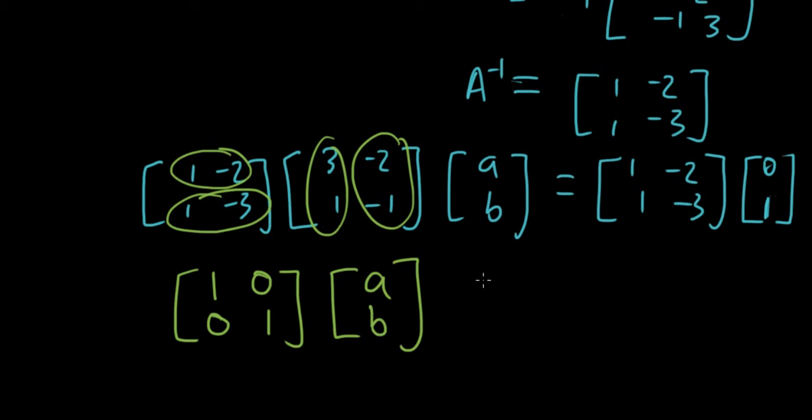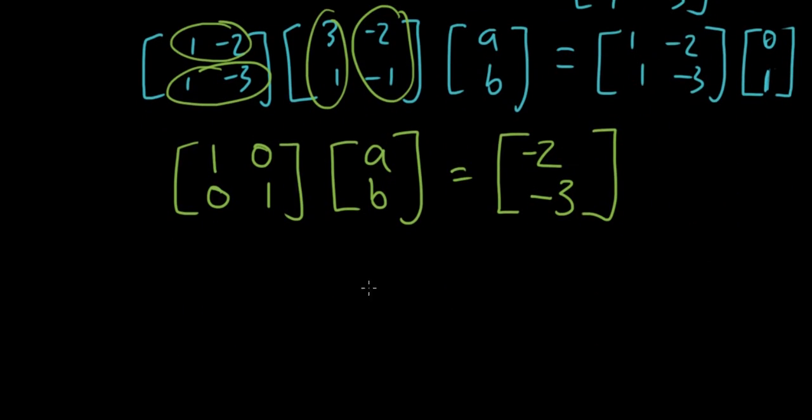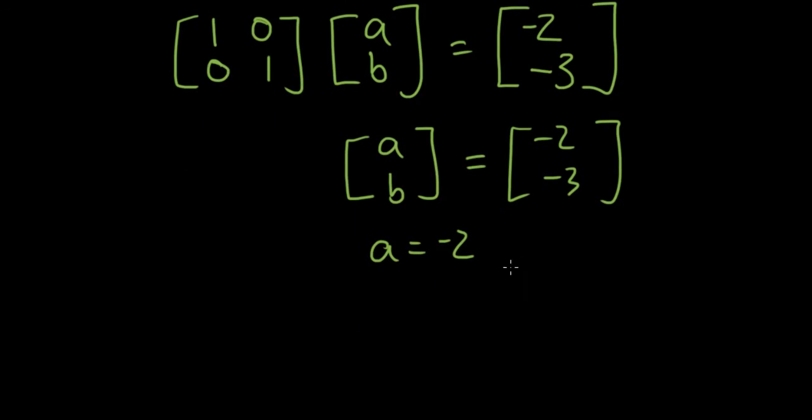So on the right-hand side, we then end up with 1 times 0 is 0. Negative 2 times 1 is negative 2. Now this means that because the identity matrix times A and B will just give you A and B again. You can try it out if you want by multiplying it out. So A and B is equal to negative 2, negative 3. So that just means A is equal to negative 2 and B is equal to negative 3.